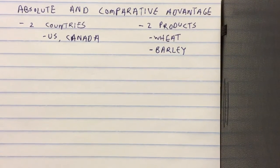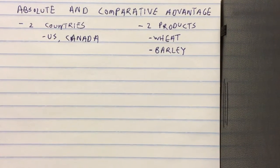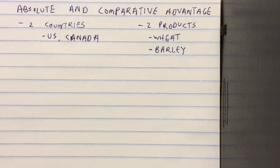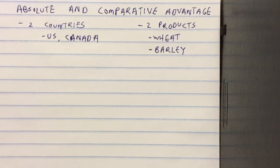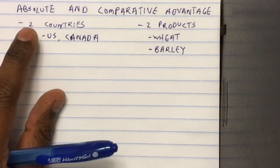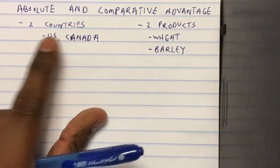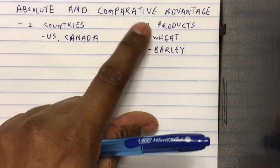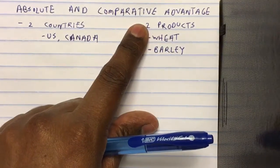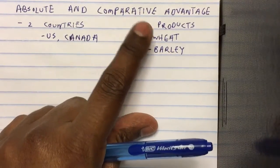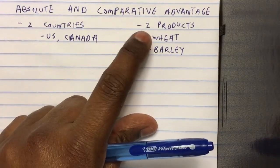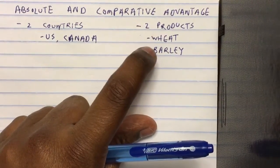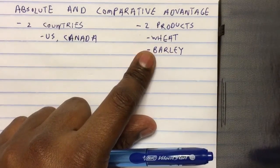Hello everyone. Today we're going to look at an example of how to solve for absolute and comparative advantage. Let's say there are two countries, the US and Canada, and there are just two products that each country produces: wheat and barley.